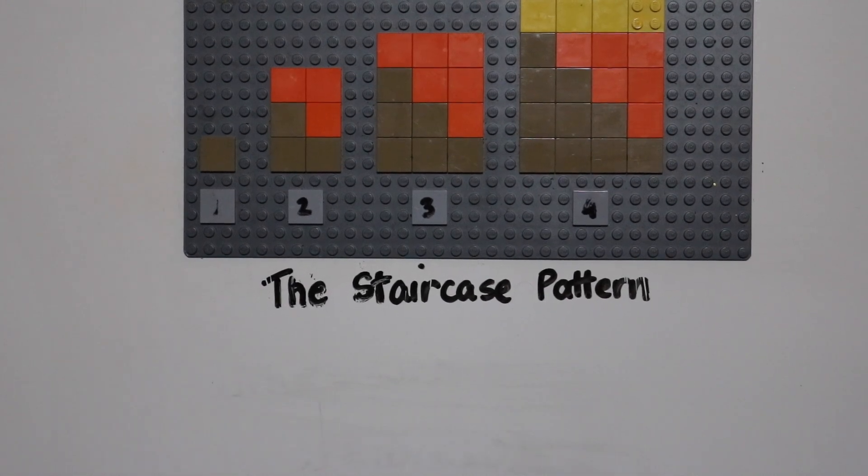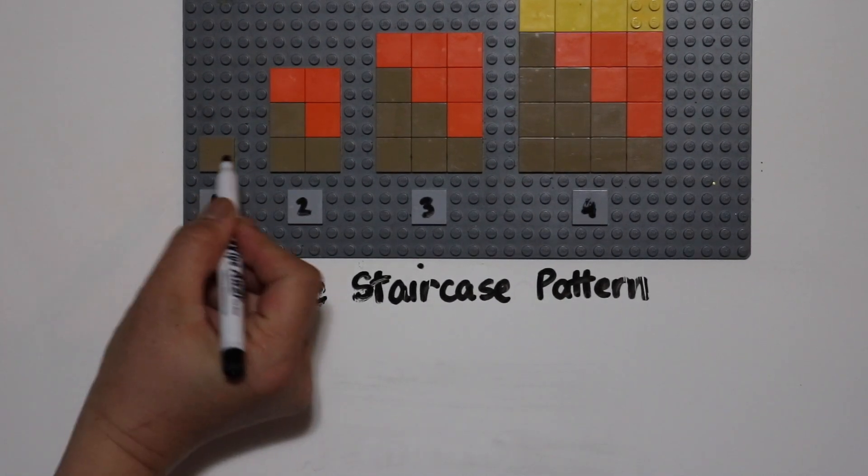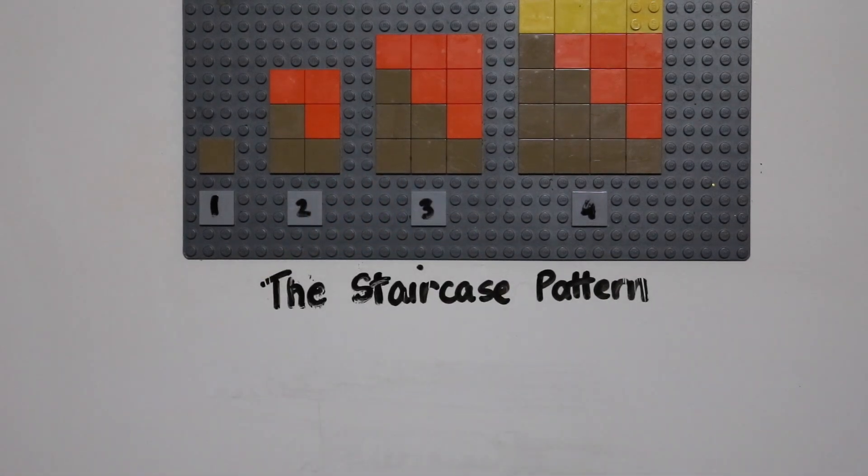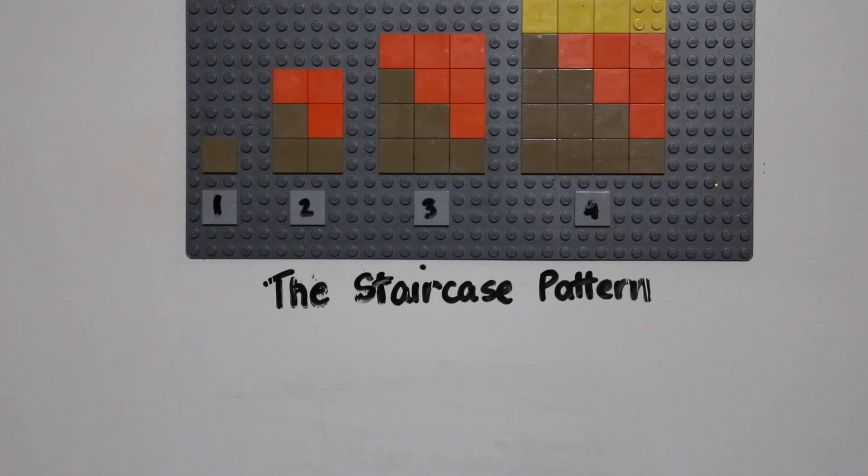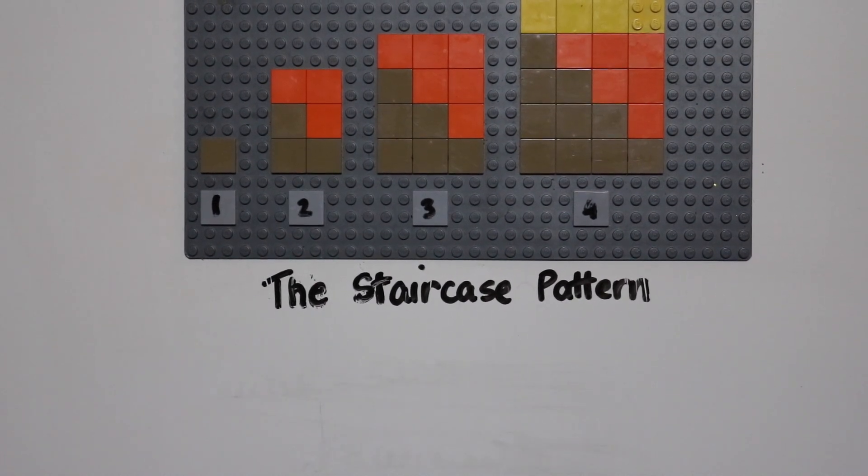The original pattern, as you can see, are these brown tiles right here. And a strategy that I like using is to complete the shape. In this case, the shape turns out to be a rectangle.